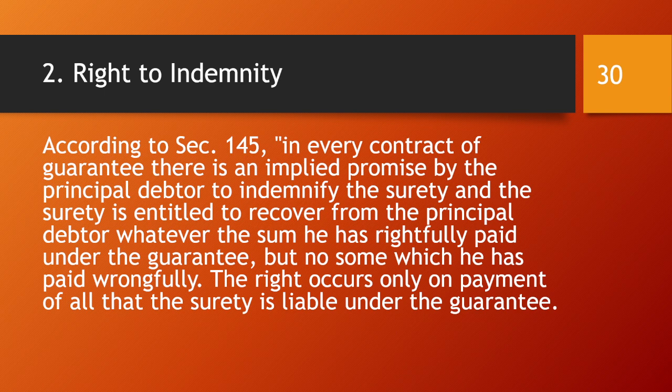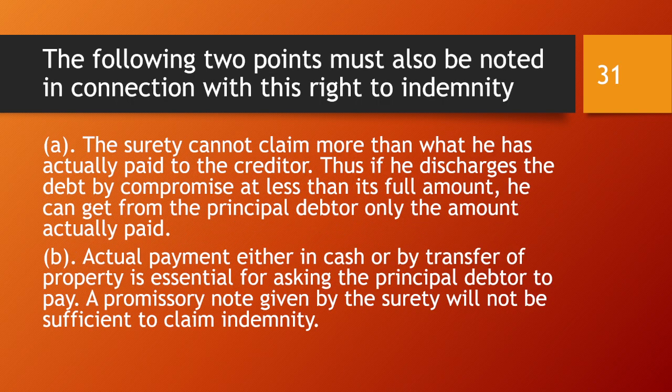The next right is the right to indemnity. According to Section 145, in every contract of guarantee there is an implied promise by the principal debtor to indemnify the surety. The surety is entitled to recover from the principal debtor whatever sum he has rightfully paid under the guarantee, but no sum which he has paid wrongfully. The right occurs only on payment of all that the surety is liable for under the guarantee.